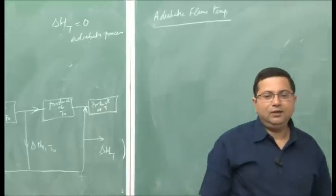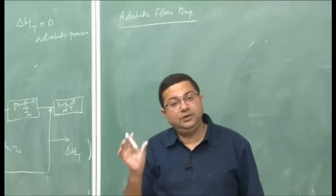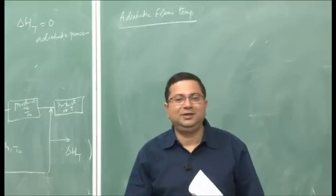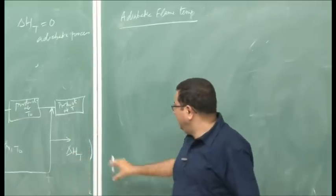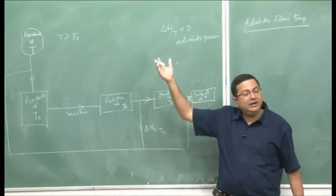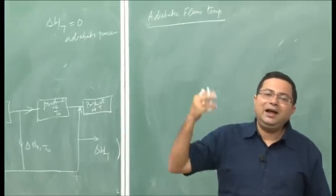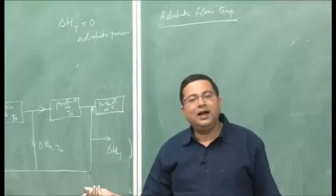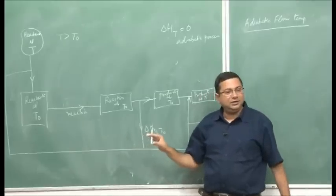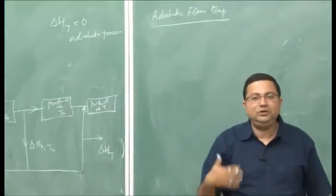If a combustion reaction occurs adiabatically, then δH_out = 0 — no heat leaves the system, so the total system enthalpy remains constant. For a constant pressure process, Q_dot = 0 implies the enthalpy of the system remains constant. The chemical reaction liberates heat which goes to heat up the products to a higher temperature, so that the enthalpy of the system remains constant.